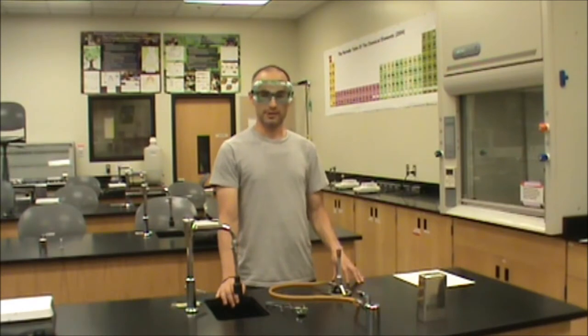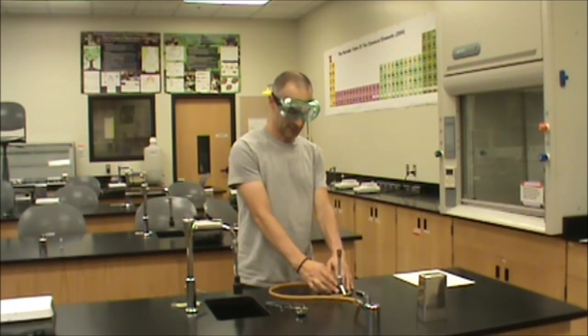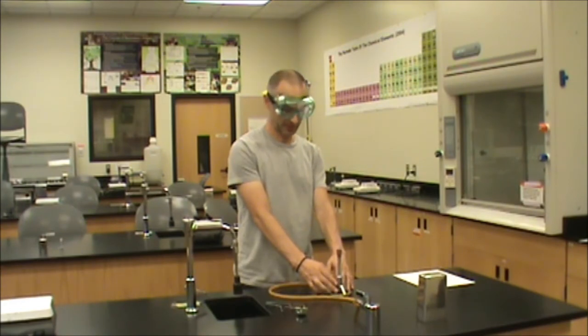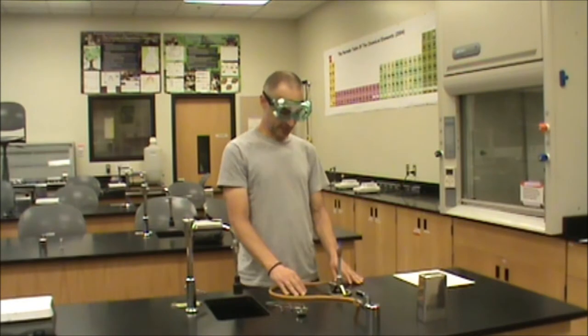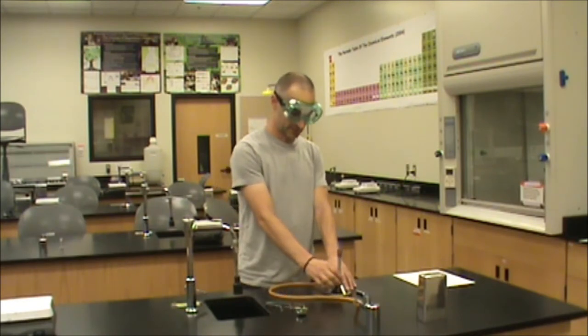You may need to adjust the flame size or the amount of air going to the flame. The flame size can be adjusted up or down using the valve at the base of the Bunsen burner, and you can adjust the air right here.